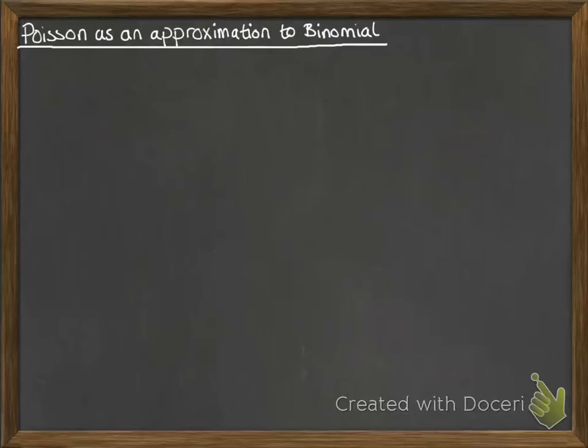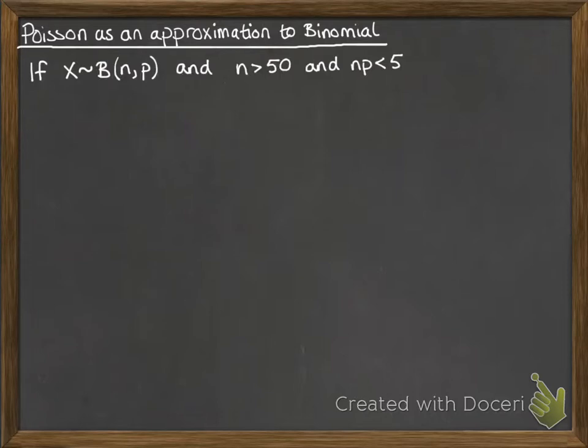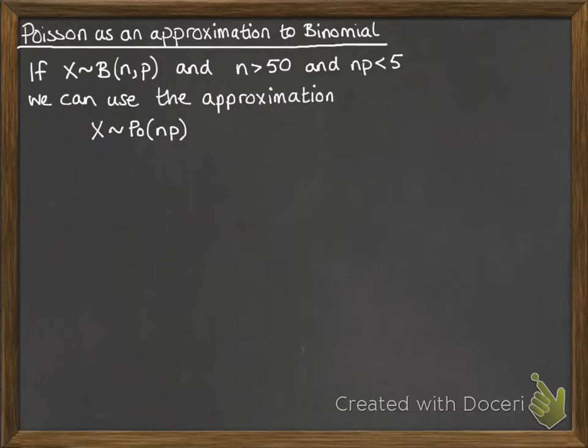Poisson distribution as an approximation to the binomial. We might want to do this if it fits, as it's much easier to work out probabilities on a Poisson distribution — the calculation is easier than doing binomial. So if x follows a binomial distribution with parameters n and p, where n is the number of trials and p is the probability of success, and n is large enough (n bigger than 50) and n times p is small (less than 5), then we can approximate it using a Poisson distribution where the parameter is np.